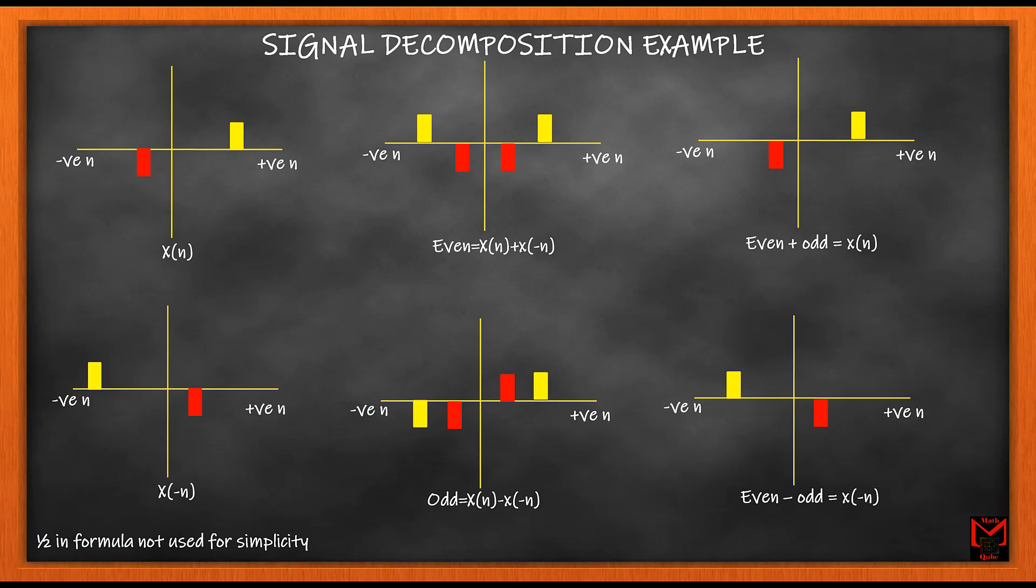Summing these two you get back your x(n), and taking the difference you get back your x(-n), thus proving the signal decomposition.